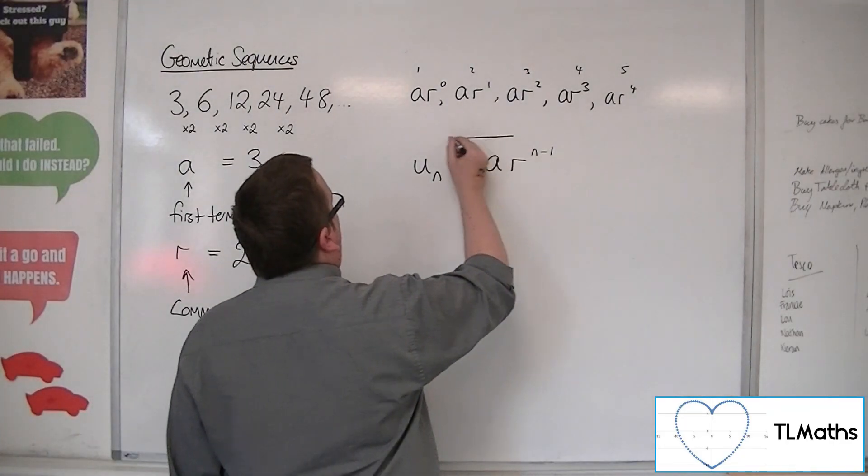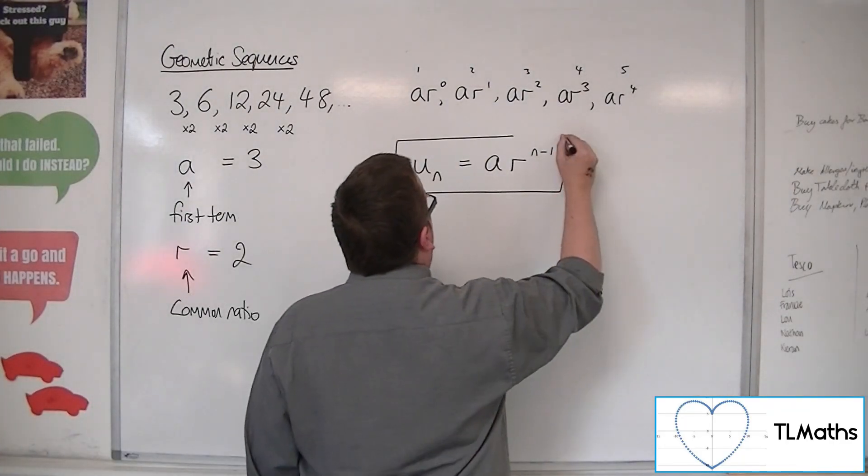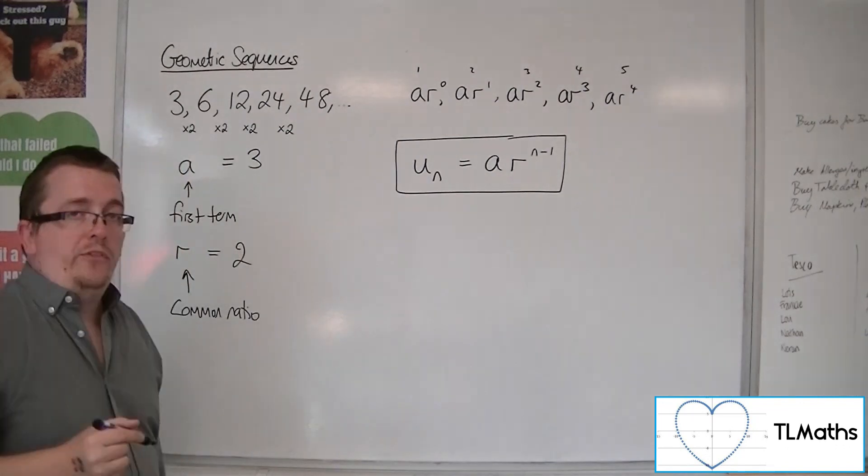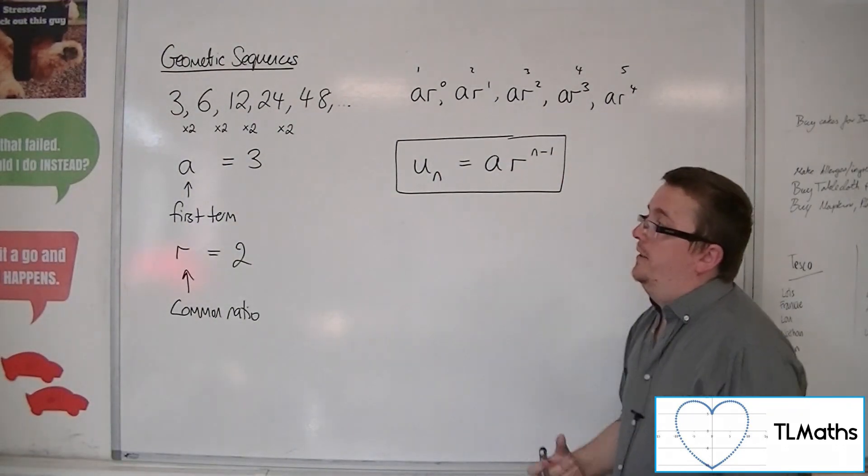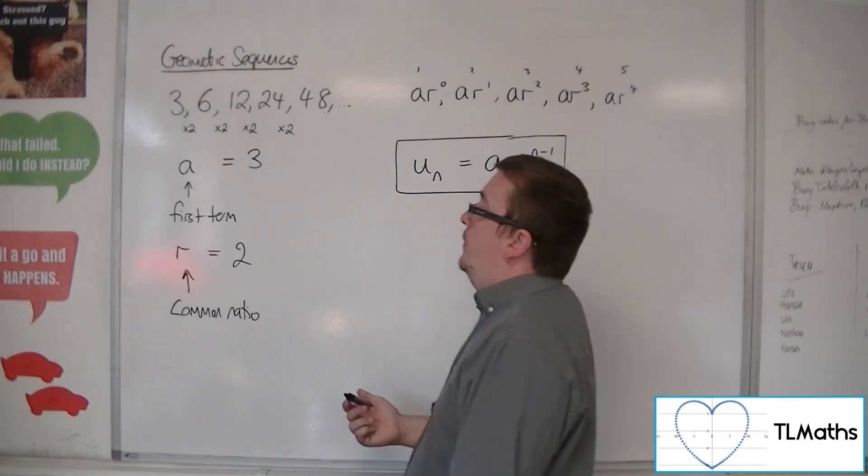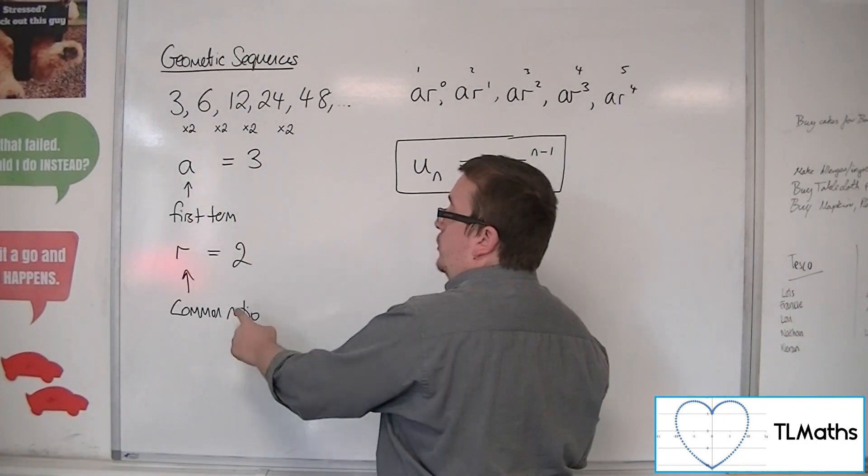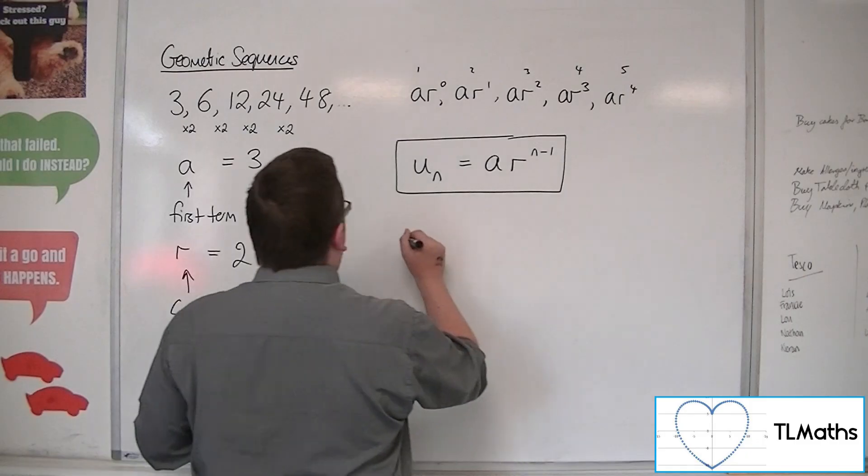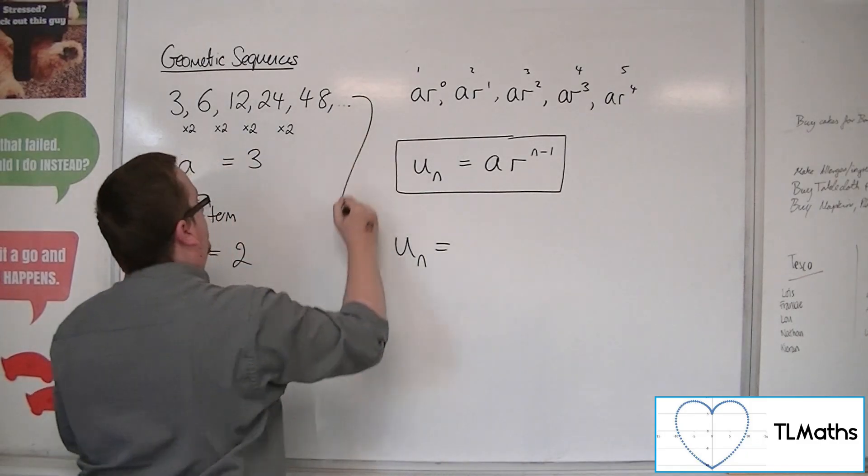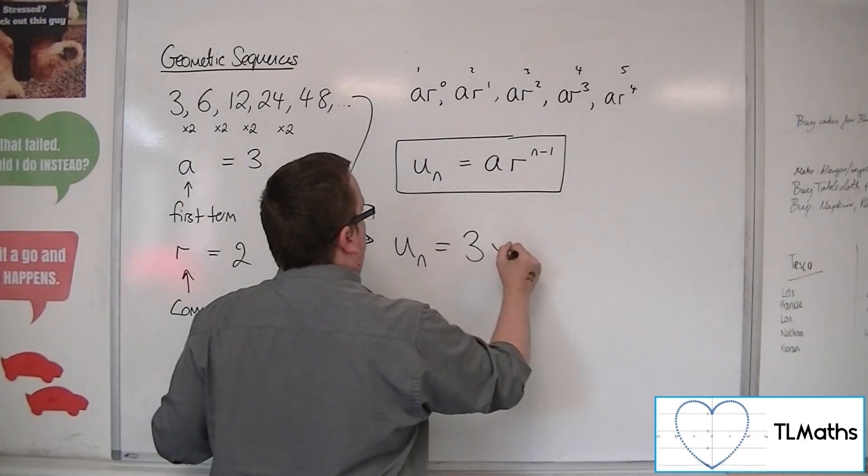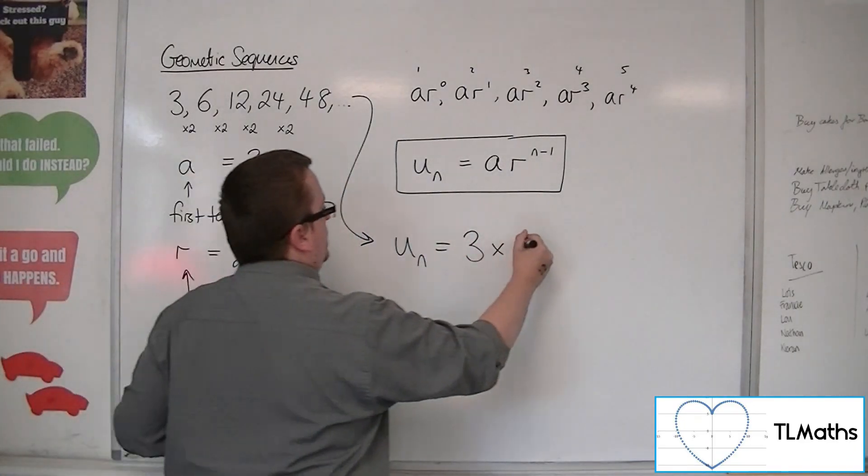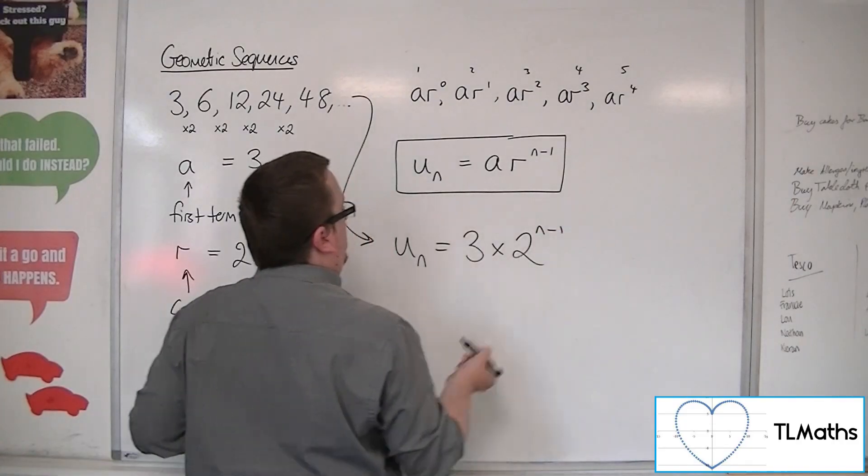And so this is the nth term of a geometric sequence. OK, so in our case up here, we had that the first term was 3, the common ratio was 2. So the nth term for this sequence is a times r to the power of n minus 1.